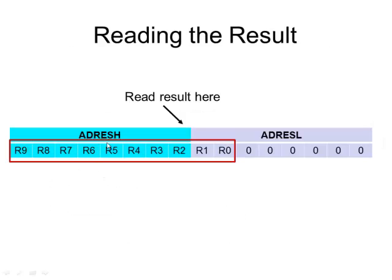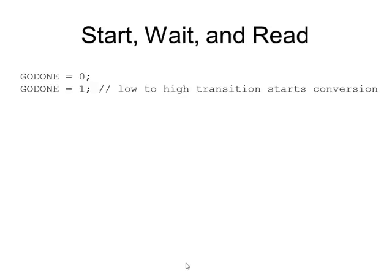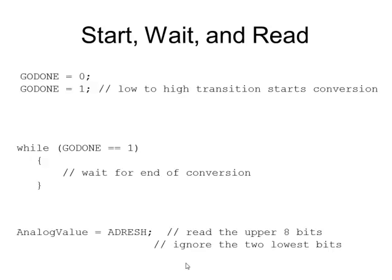Reading the result involves reading from the ADRES high and the two bits from ADRES low registers. If we're only interested in an 8-bit result, we just take the ADRES high register and assign it to a variable — called analog value, actual temperature, or whatever. So to summarize: start a conversion with go_done = 0 then 1 for the low-to-high transition; wait using the while loop; then read the 8-bit analog-to-digital value from ADRES high. Print this page from your notes — there's everything you ever wanted to know about analog-to-digital converters.